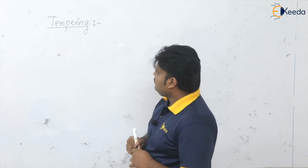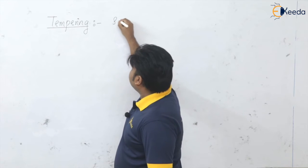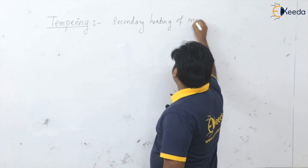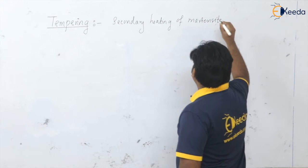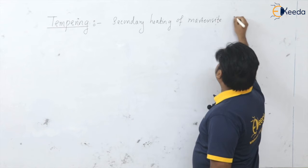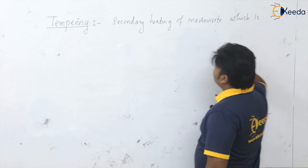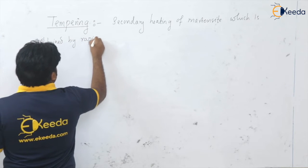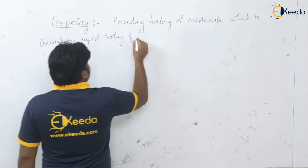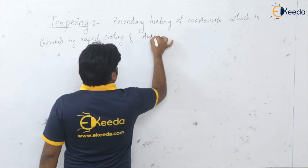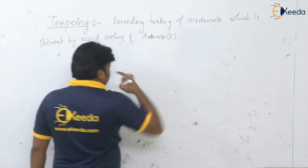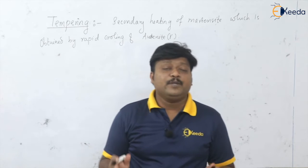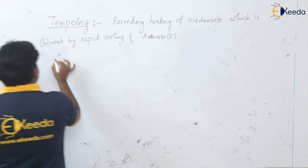Tempering is actually the secondary heating of martensite. This martensite is formed by rapid cooling of austenite — that is gamma austenite. So tempering is the process of secondary heating of the martensite which is obtained by the rapid cooling of austenite.